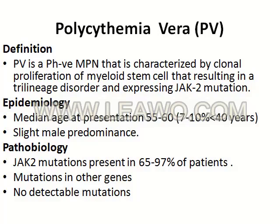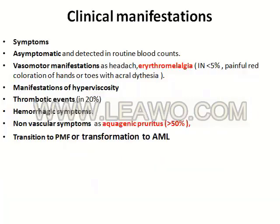Polycythemia vera, by definition, is a Philadelphia-negative myeloproliferative neoplasm characterized by clonal proliferation of myeloid stem cells resulting in a trilinear disorder expressing JAK2 mutation. It is very important to remember that polycythemia vera is a trilinear disorder expressing JAK2 mutation. The median age at presentation is 55 to 60 years old with slight male predominance. JAK2 mutation is present in 65 to 97% of myeloid stem cells.